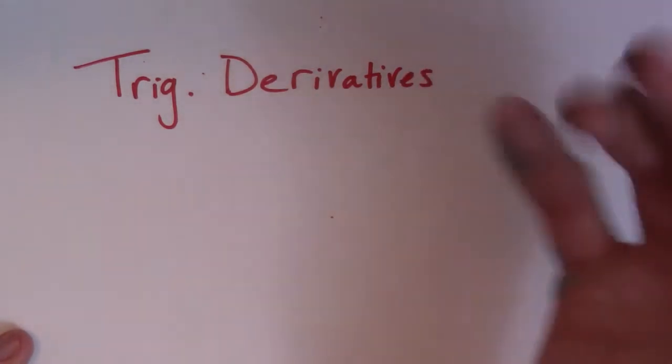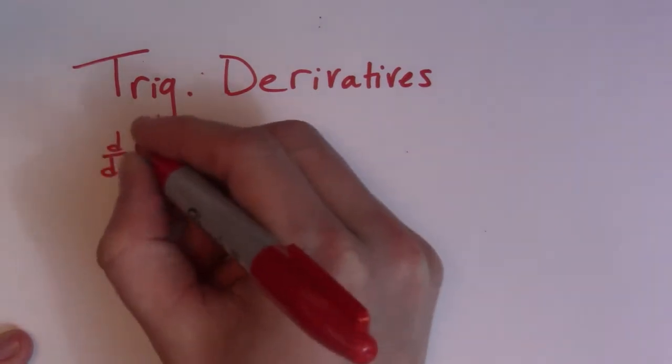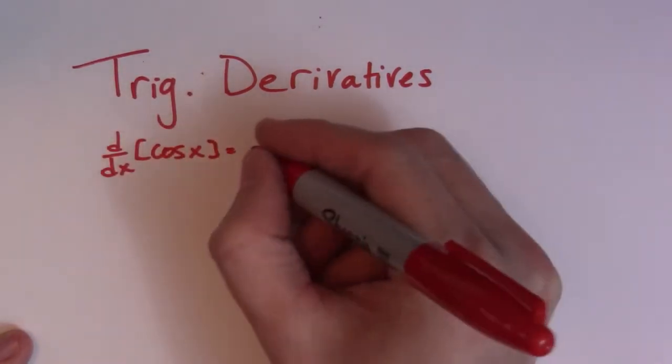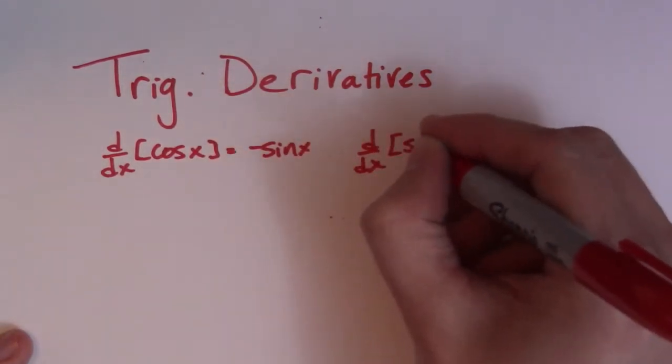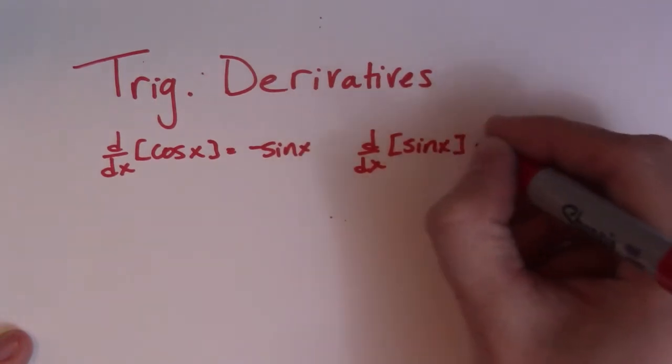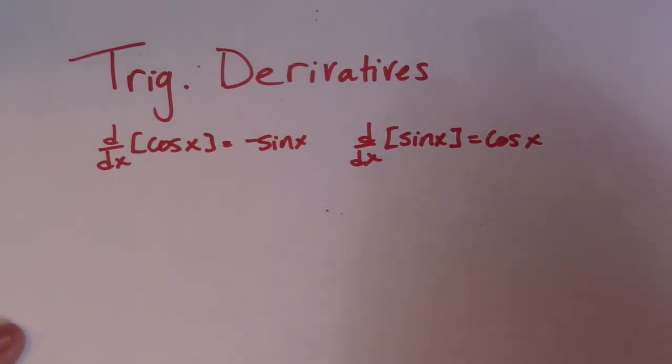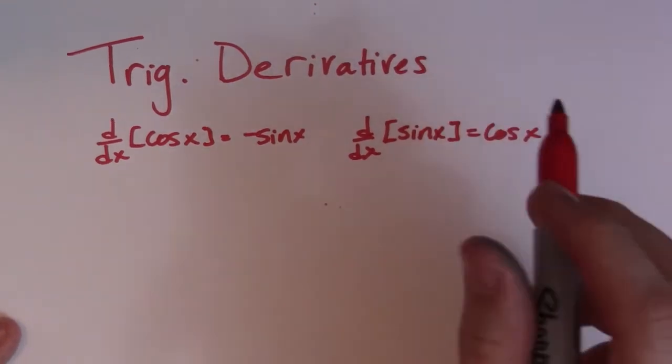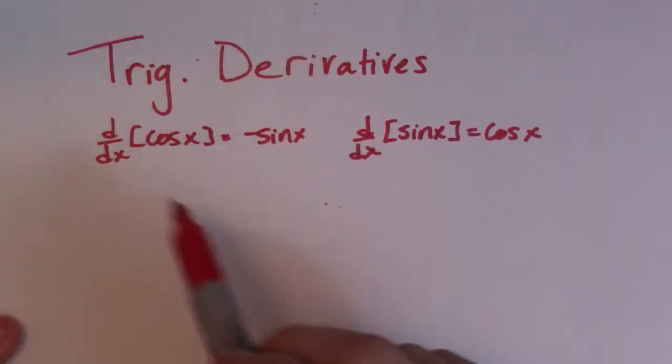So we always remember the easy ones, right? The derivative of cos x is negative sin x, and the derivative of sin x is cos x. It's the other ones that always cause people issues, and those are the derivative of secant, derivative of tan, cosecant, and then cotan. So I was trying to come up with something with my students to try and help them remember them for their calculus placement test.